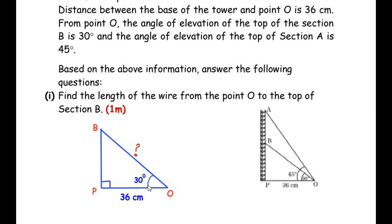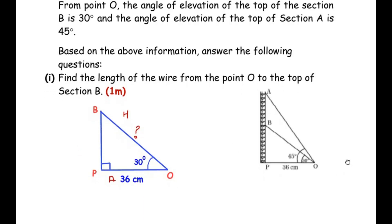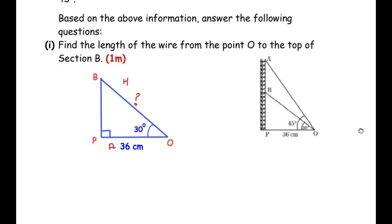To determine which trigonometric ratio to use, we identify the sides. The side opposite to the concerned angle (30°) is BP — that is the opposite side. The side opposite to 90° is OB — that is the hypotenuse. OP is the adjacent side by default. We need to find the hypotenuse OB, and OP (adjacent) is already given as 36 cm, so we do not need the opposite side. The ratio using hypotenuse and adjacent side is cosine.